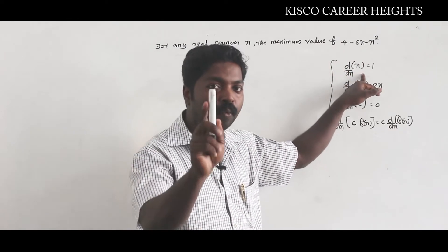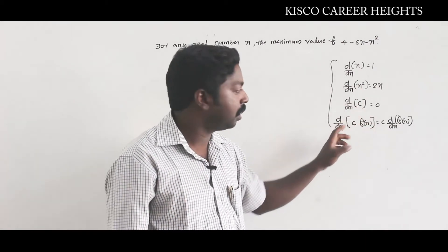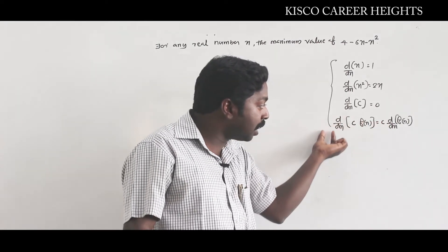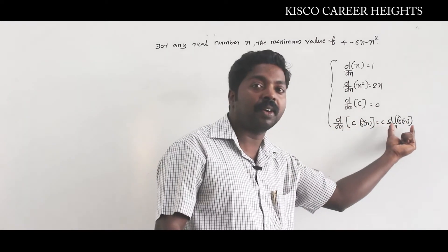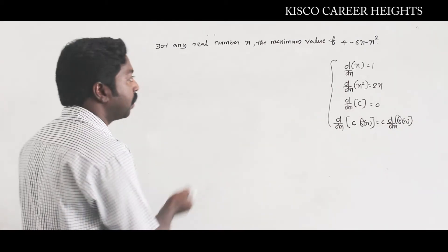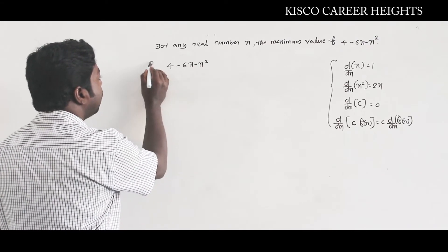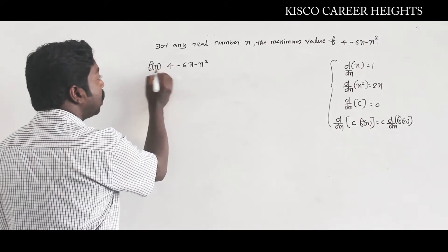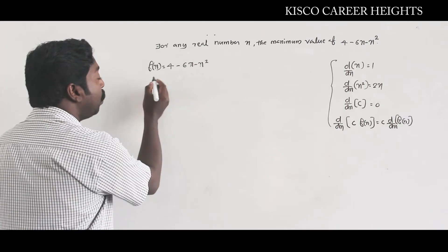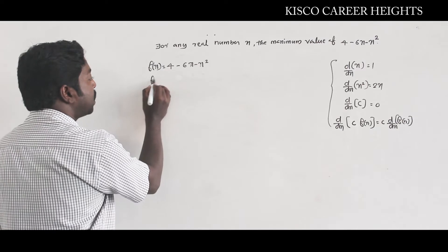Please keep these four rules in mind for this question. Derivative of x is exactly 1, x² is exactly 2x, a constant term is always 0, and a constant times a function means taking the constant outside then differentiating. Now take the quadratic expression 4 - 6x - x², and call it f(x). Differentiate the entire expression.